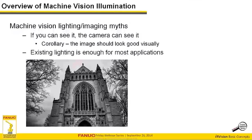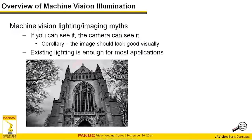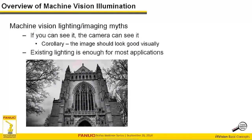A corollary is: 'the image should look good.' You don't need a good-looking image for machine vision. In fact, most great machine vision images don't look good to humans at all. The only goal is to extract targeted features — the foreground features of interest — relative to the confusing background. You don't need very much contrast as a human, but cameras do.